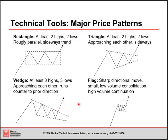A flag also features a sharp directional move, a small low-volume consolidation, and then a high-volume breakout and continuation. You should be looking at much lower volume during the flag itself. One of the big issues with a flag is that these are normally shorter-term events. Rectangles, triangles, and wedges can take place over weeks, months, years, or even decades, whereas a flag normally takes place over days or weeks. It's pretty rare to see a flag lasting more than a few months.